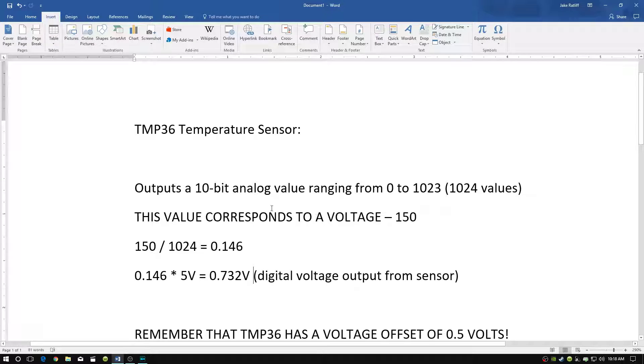So the first thing we need to know is that the TMP36 temperature sensor is going to output a 10-bit analog value ranging from 0 to 1023, which is a total of 1024 values. This value is going to directly correspond to a voltage.